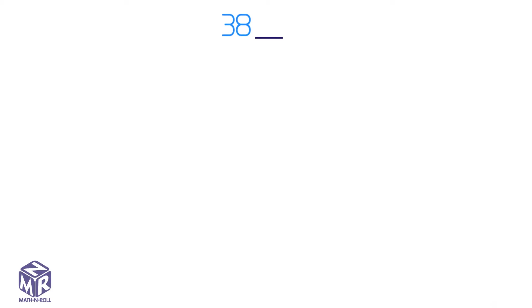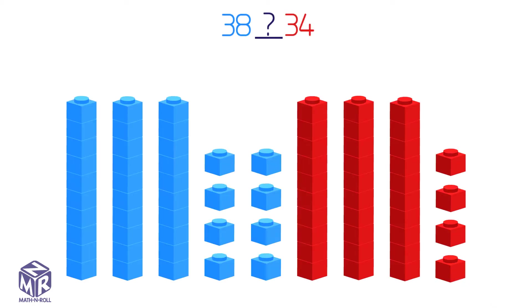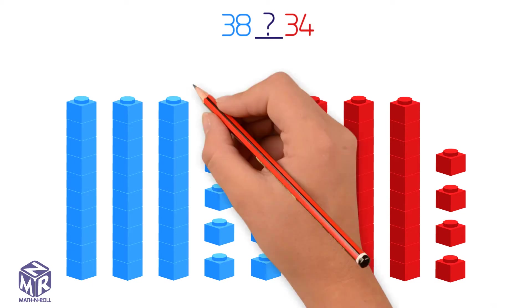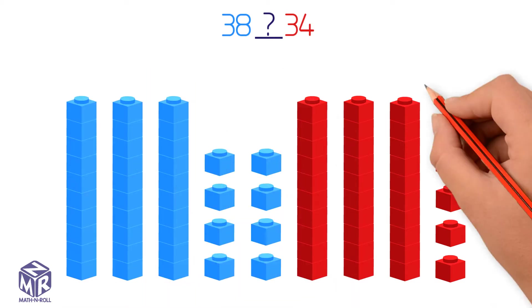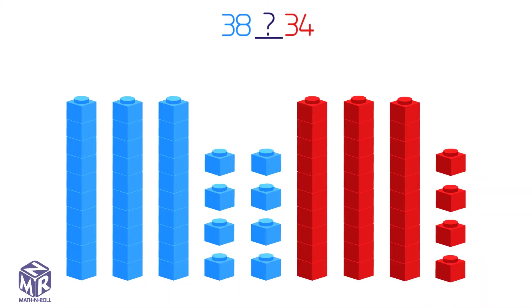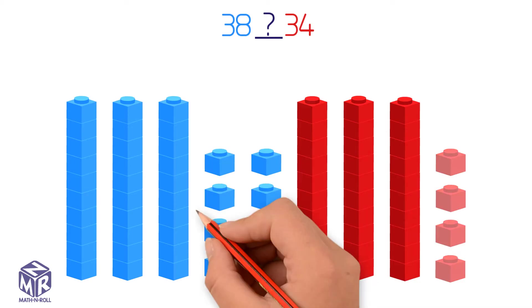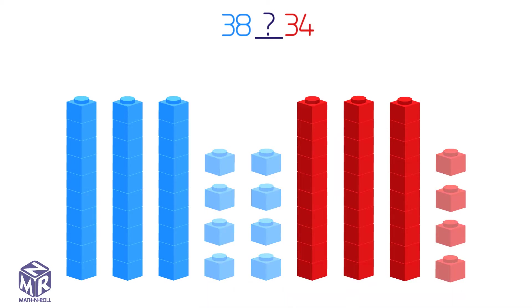Let's try another example. What's less, 38 or 34? 38 has three tens and eight ones. 34 has three tens and four ones. If the tens are the same, we compare the ones. Four ones is less than eight ones, so 34 is less than 38.